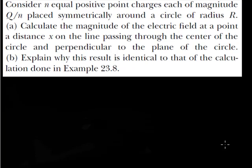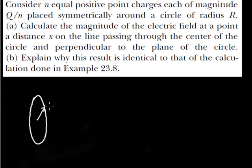Let us discuss this problem. It says n equal positive point charges, each of magnitude Q/n, are placed symmetrically around a circle of radius r. So we have a circle of radius r, and Q/n charge is placed symmetrically around the circle.